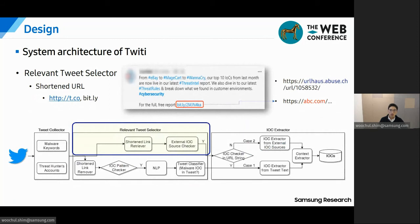Some tweets have informative reference links, meaning we need to check shortened URLs before dropping them all. For example, a link to URLhaus can provide valid IOCs from their site, because URLhaus is a service that shares malicious URLs. If a tweet has no IOC pattern in its text, Twitty only checks the source of the shortened URL. In this case, if the source is not on our monitoring list, Twitty discards that tweet.